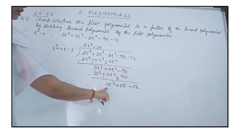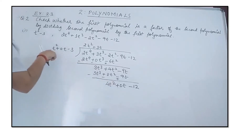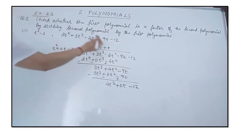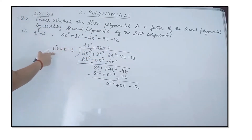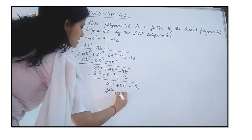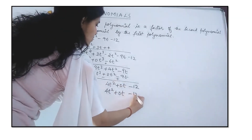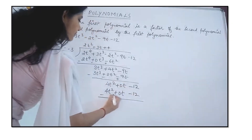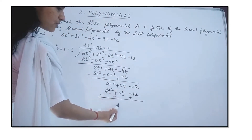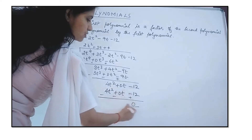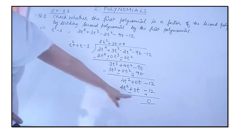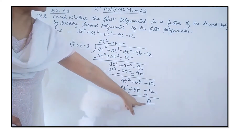We check: 4t² divided by t² gives 4, which is written in the quotient. Multiplying 4 with the divisor gives 4t² + 0t − 12. Subtracting, these terms cancel to 0, and −12 + 12 gives 0.